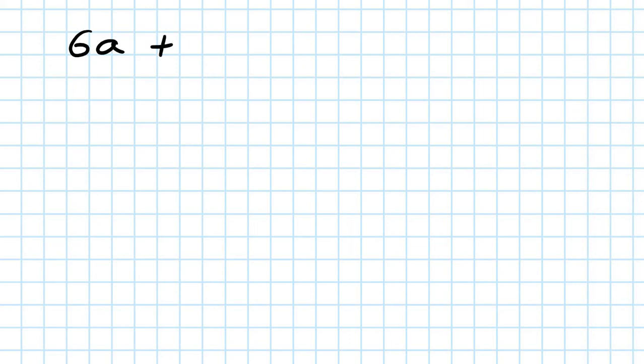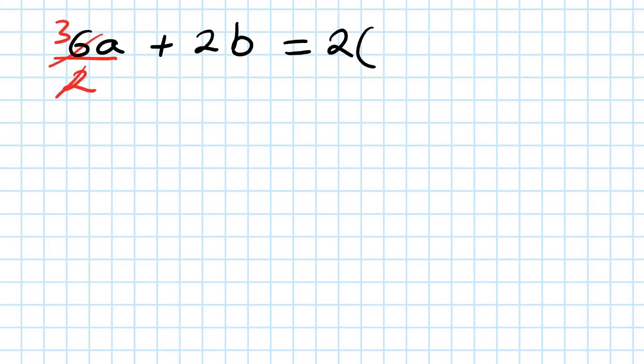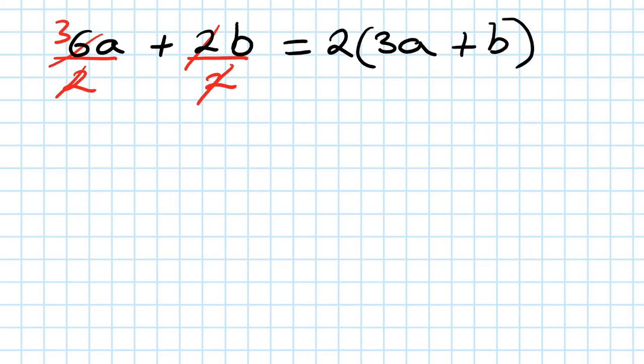Now let's look at something slightly different. Let's say 6A plus 2B. You have to look for the common factor. The common factor of this is 2, because 2 can go into 6. So 2 is the highest common factor. I take the 2 out, then divide by 2 — that gives me 3A. And divide by 2 cancels out, so you're left with plus B.